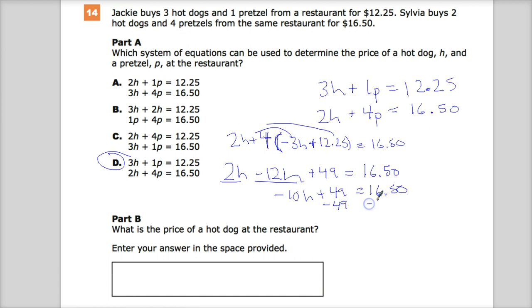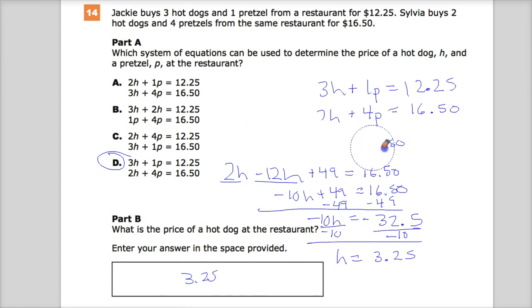Subtract 49, divide by negative 10, and end up with the final hot dog value of $3.25. That's substitution. Like earlier, I said that I'm definitely going to use elimination, so I guess you get both.